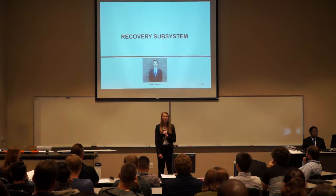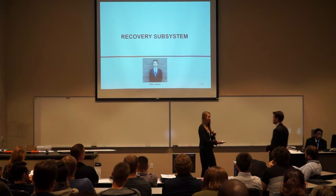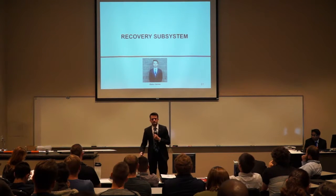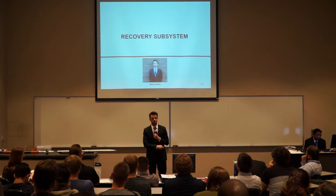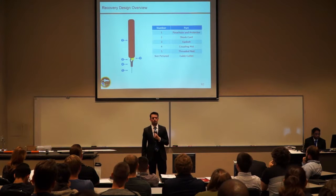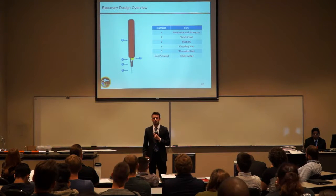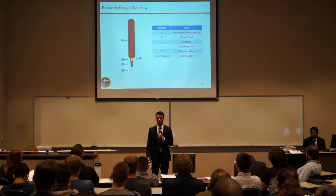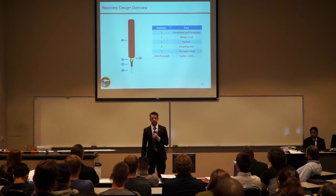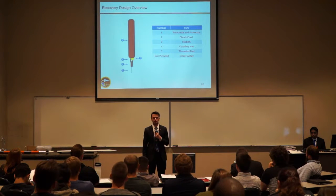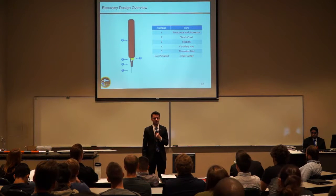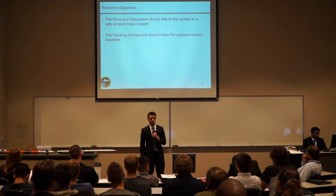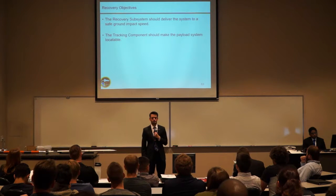I'd like to pass it to Blake Gaines to go over the recovery subsystem. The recovery design system on all stages consists of a parachute, parachute protector, shock cord, eye bolt, coupling gun, and a threaded rod. A cable cutter on Stage 2 and the payload fairing allows a partially deployed state. The recovery subsystem should deliver the system to a safe ground impact speed and the tracking component should make the payload system locatable.